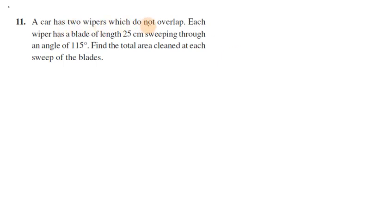A car has two wipers which do not overlap. Each wiper has a blade length of 25 cm sweeping through an angle of 115 degrees. Find the total area cleaned at each sweep of the blades.